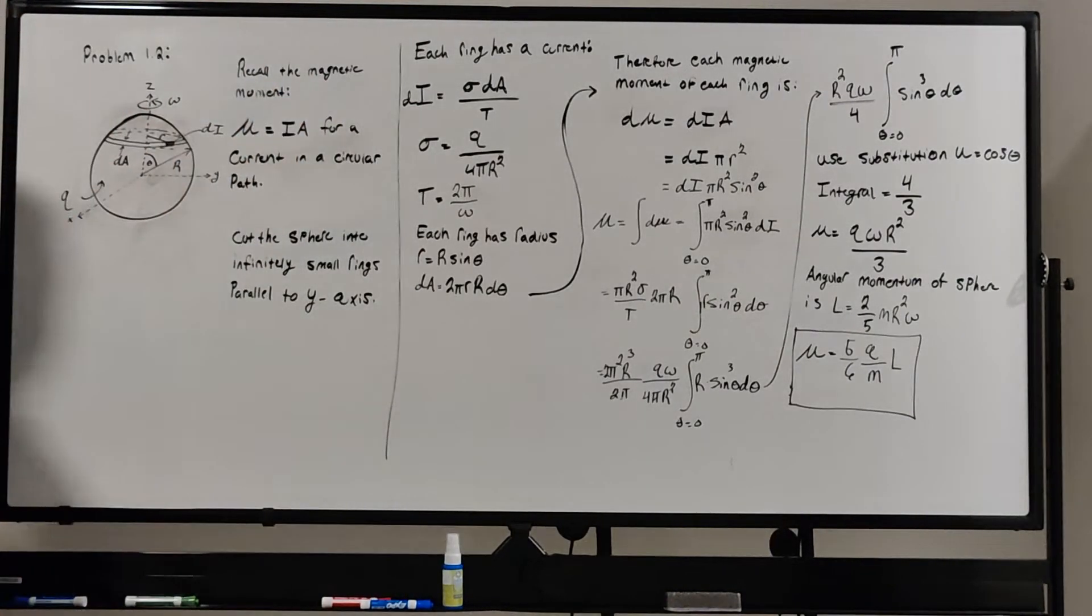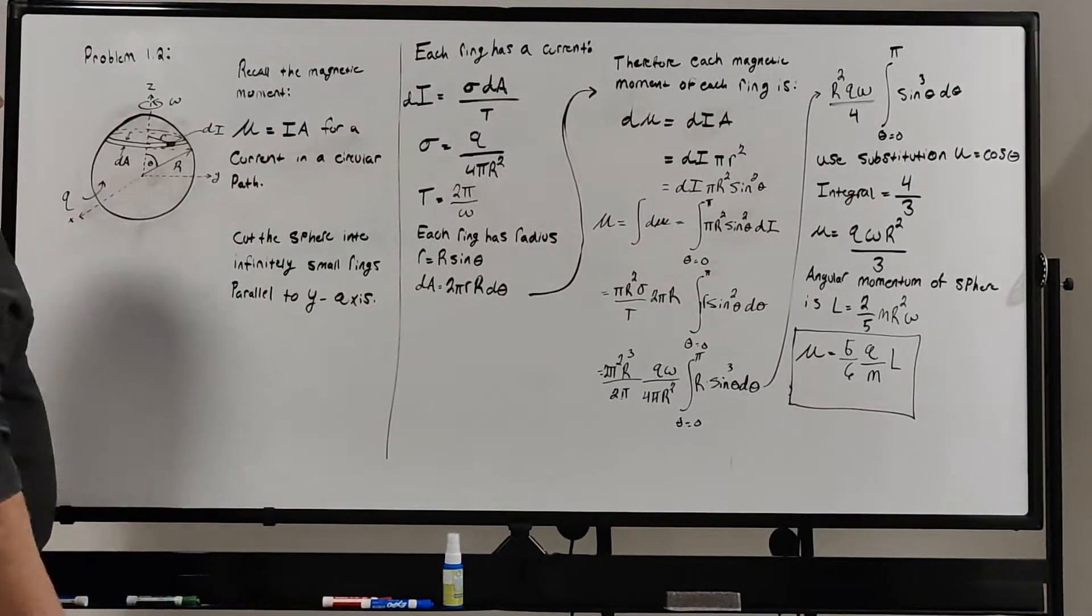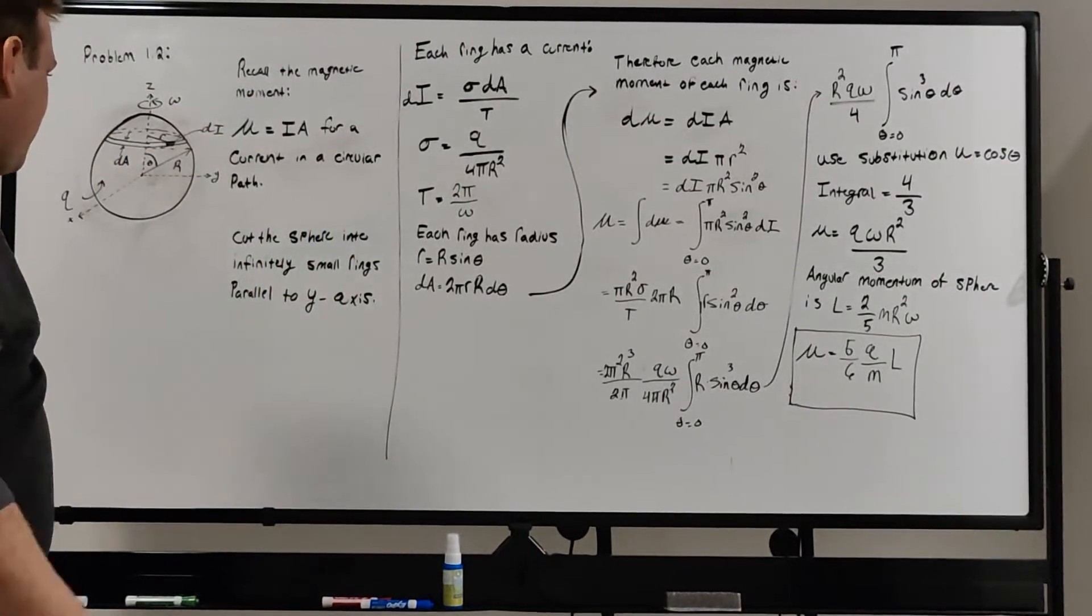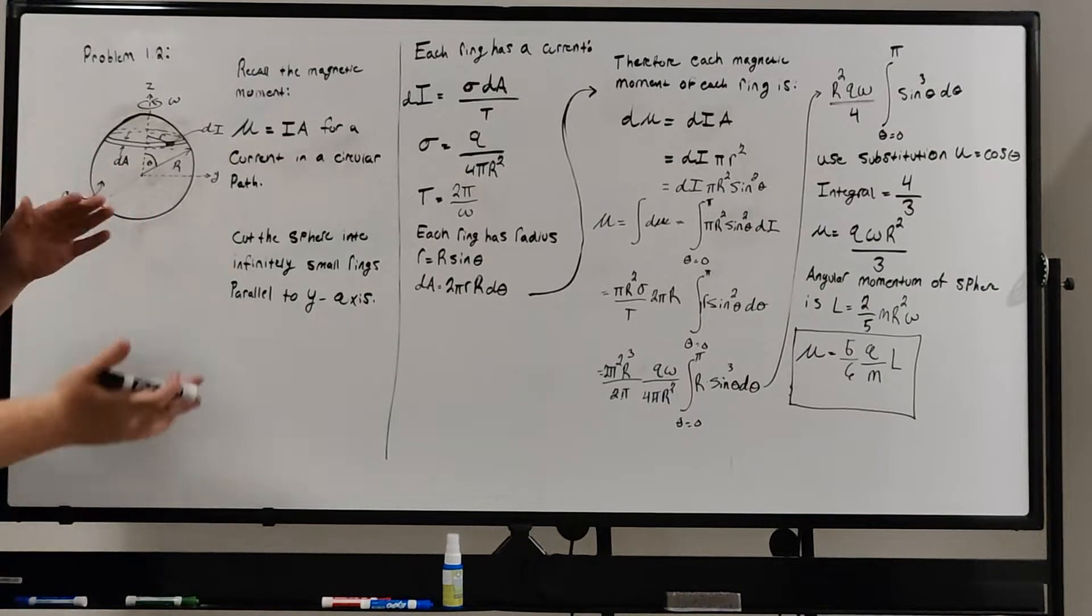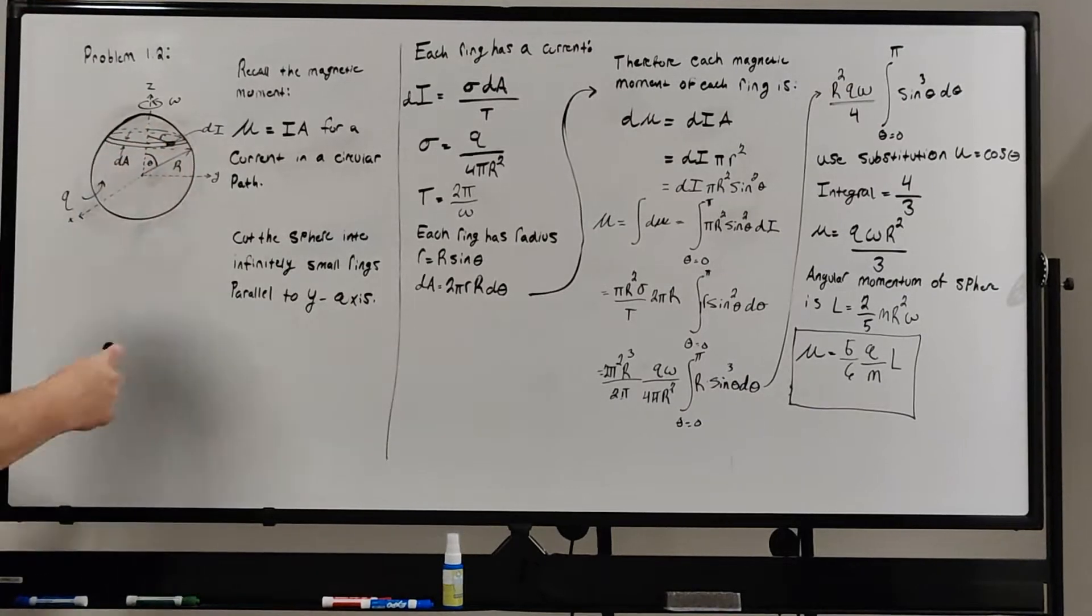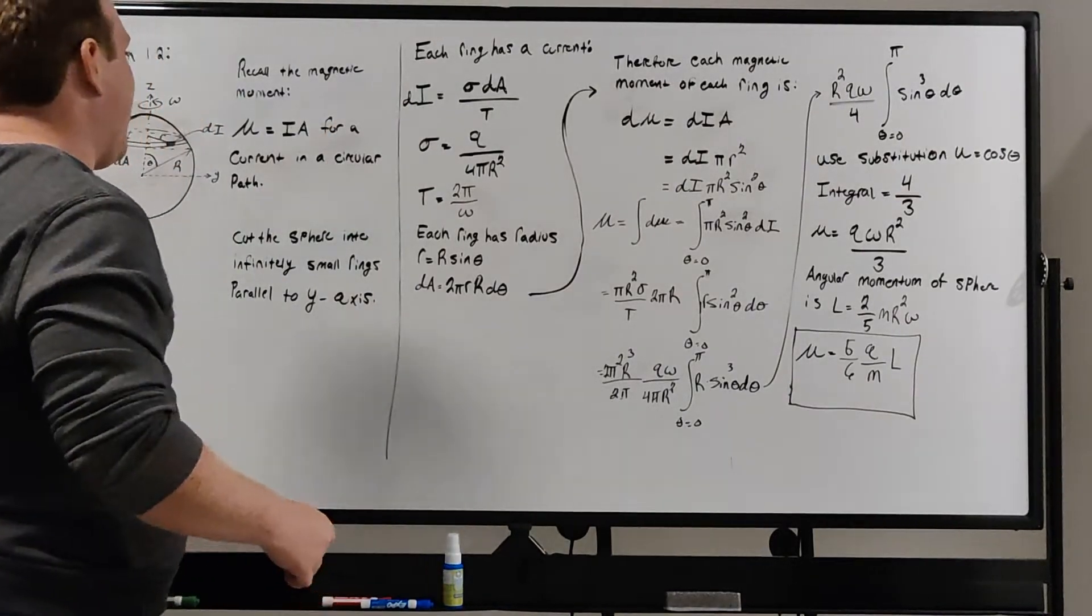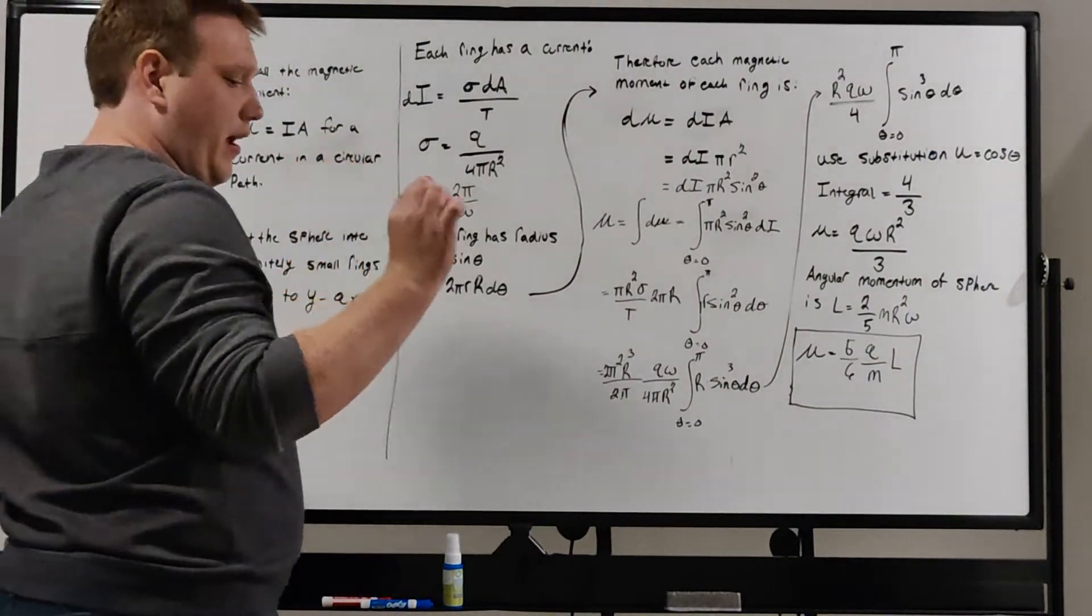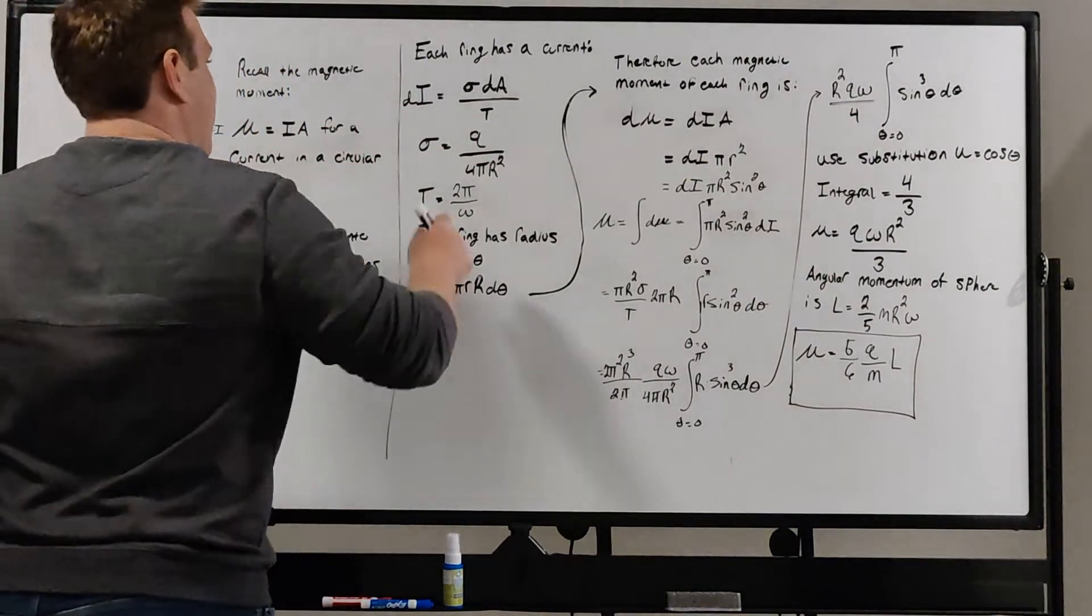Recall that the magnetic moment mu for a current going in a circular path is equal to the current times the area of that circular path. As I said, we cut the sphere into infinitesimal small rings parallel to the y-axis. I just drew one example of this ring here. If we want to think about the current dI that each ring has, not the total current of the sphere, but just an infinitesimal current of that singular ring.